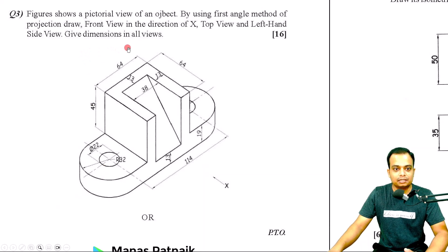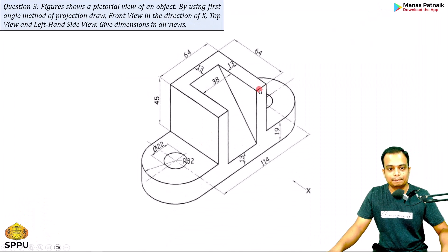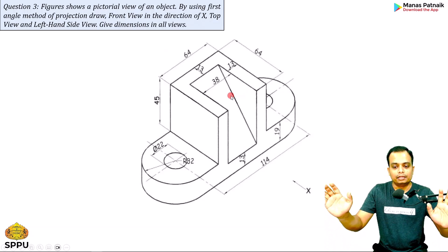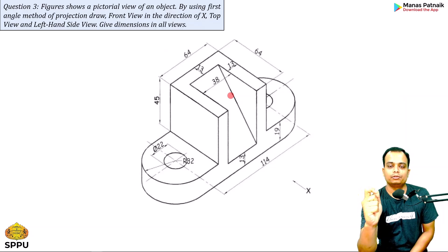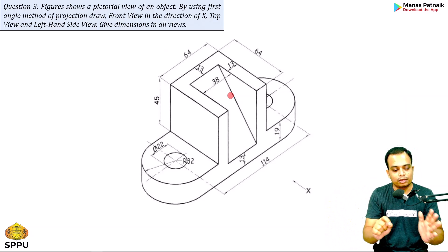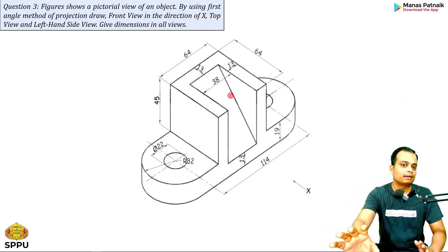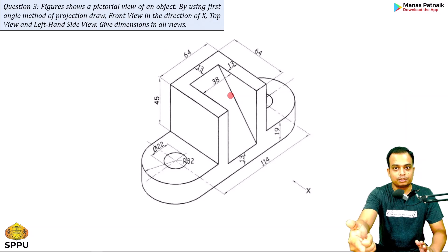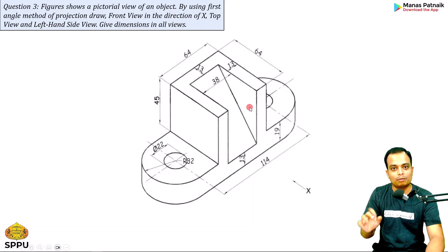It's very important to give dimensions in all the views. The first suggestion: start your drawing using a 3H or 4H pencil, very lightly. Once you are done with all the outlines, override those lines with an H pencil. I'll show you how this can be done with the help of this presentation.